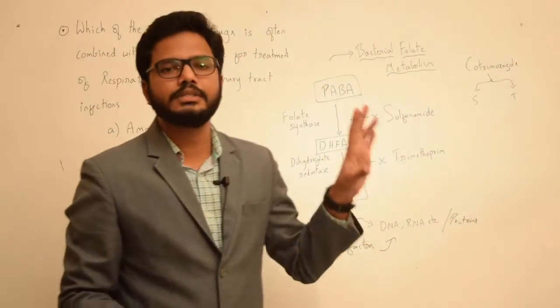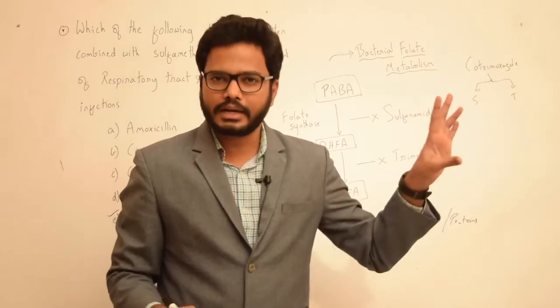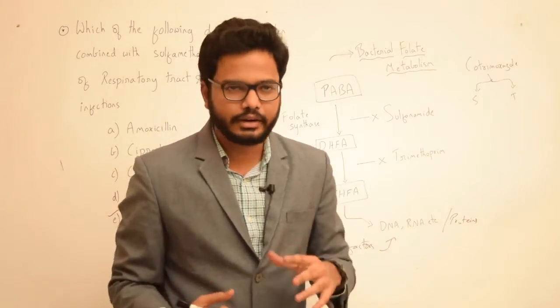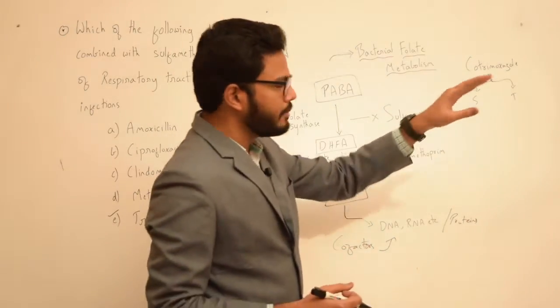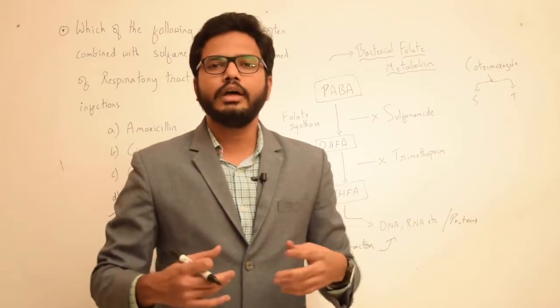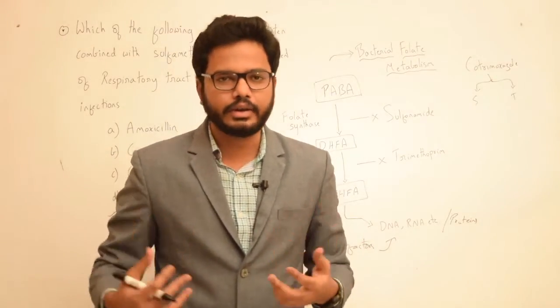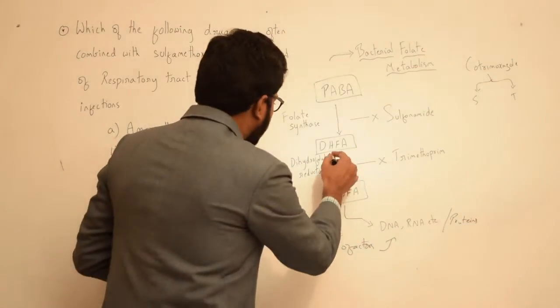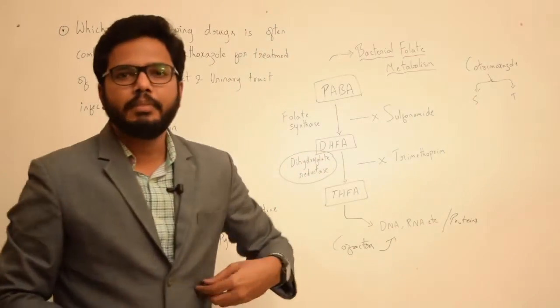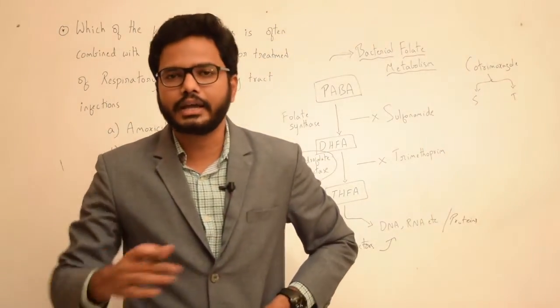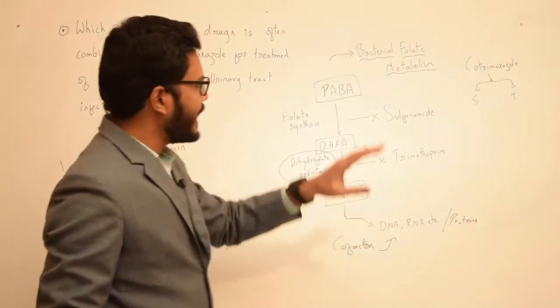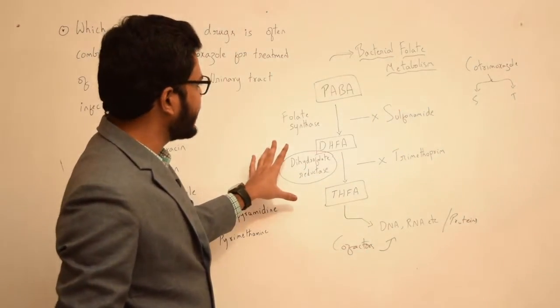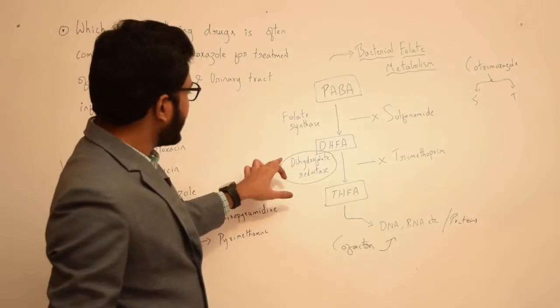This folic acid metabolism is essential. It happens in bacteria as well as humans. The advantage of using trimethoprim is that it has more than 50,000 times greater affinity for dihydrofolate reductase present within the bacterial folate metabolism cycle, so it has a very selective action against the bacterial dihydrofolate reductase.